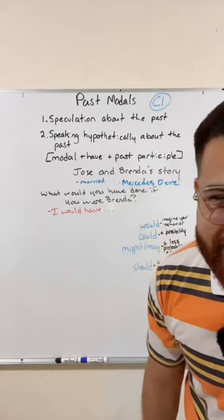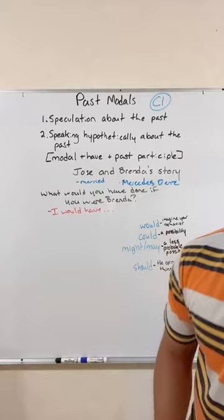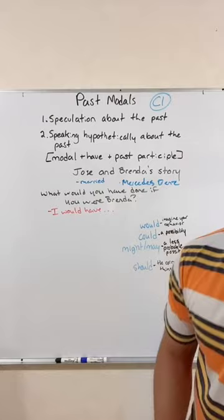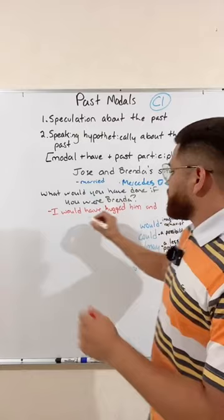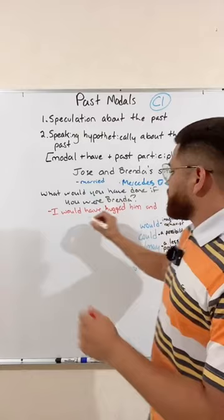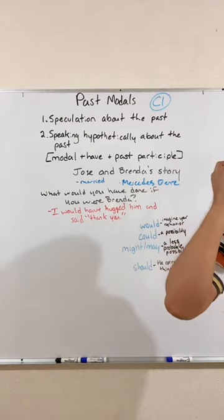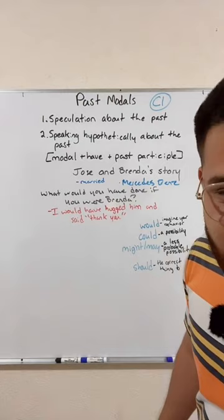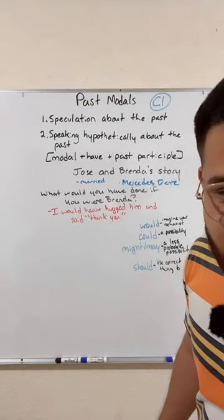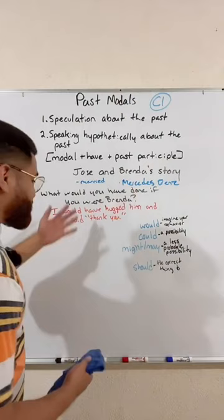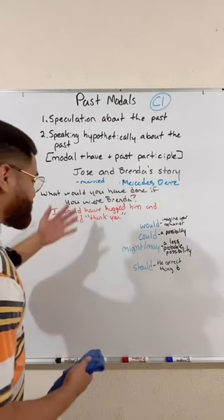Somebody says they want to be Jose's girlfriend. Esme says 'I would have hugged him and said thank you my love' — don't forget 'have,' so it's 'I would have hugged him.' Another person says 'I would have told him thank you baby.' Certido Rico says 'I would have hit him very hard' — alright, that's one answer.